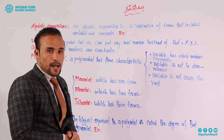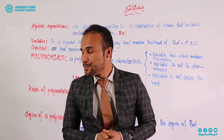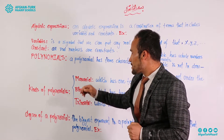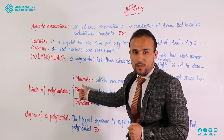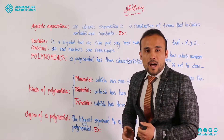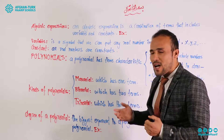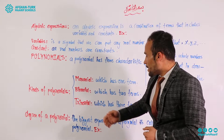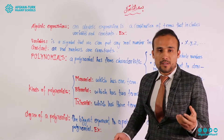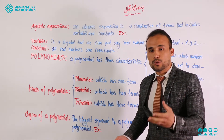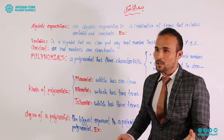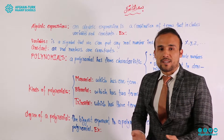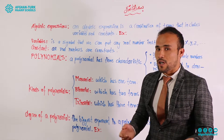On the other hand, we have the kinds of polynomials. The first kind is the monomial — a polynomial that has one term is called a monomial. The second is a binomial — a polynomial that has two terms is called a binomial. And the third is a trinomial — a polynomial that has three terms is called a trinomial.